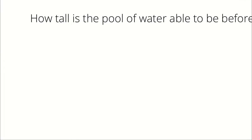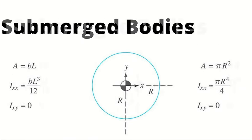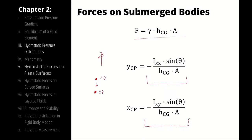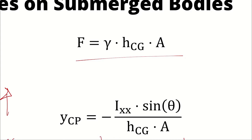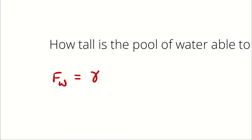I will begin by trying to calculate Fw. I know F is going to be gamma multiplied by the height from the surface to the center of gravity of the gate, multiplied by the area of effect of the water. Remember that gamma times hcg is just density times gravity — that's gamma multiplied by height, which is our pressure equation. We're saying force equals pressure times area. So I can write Fw as gamma times hcg times area.